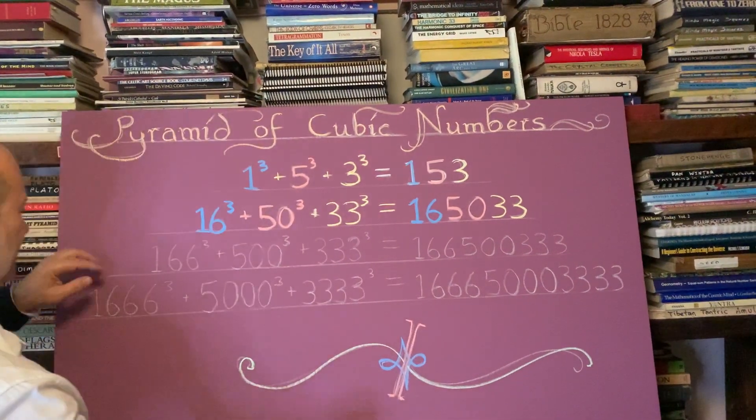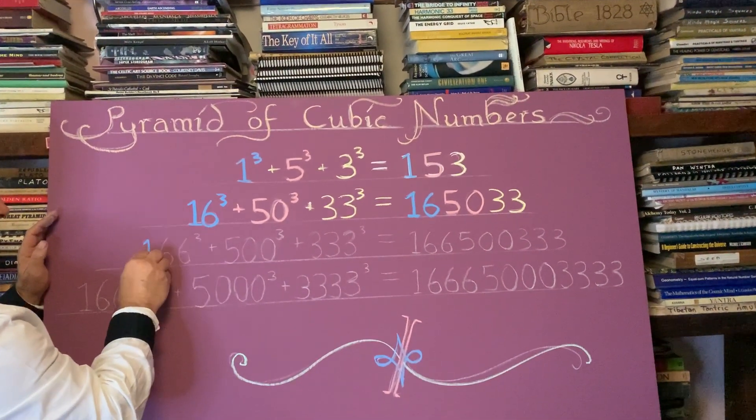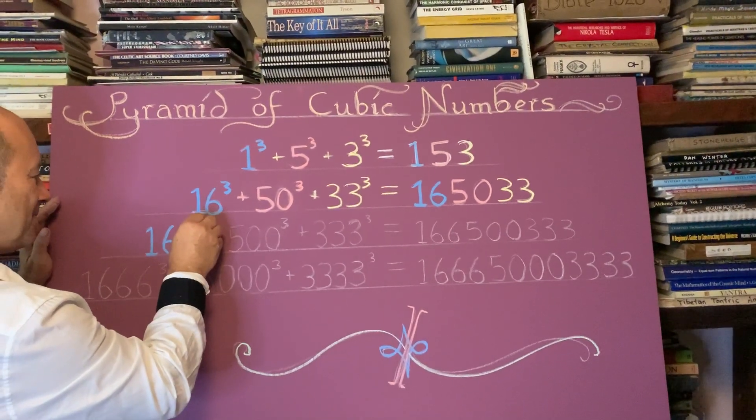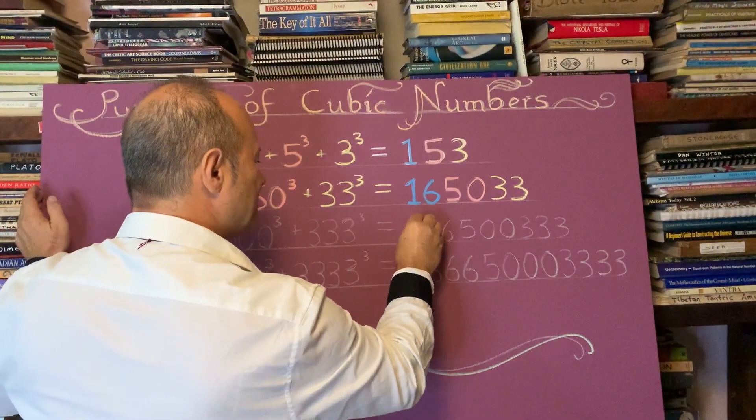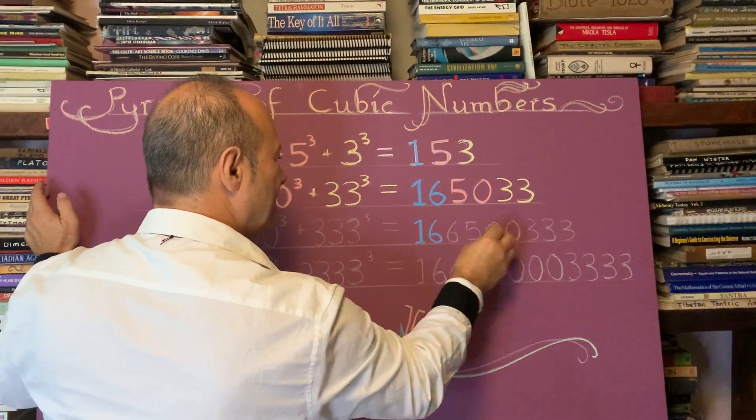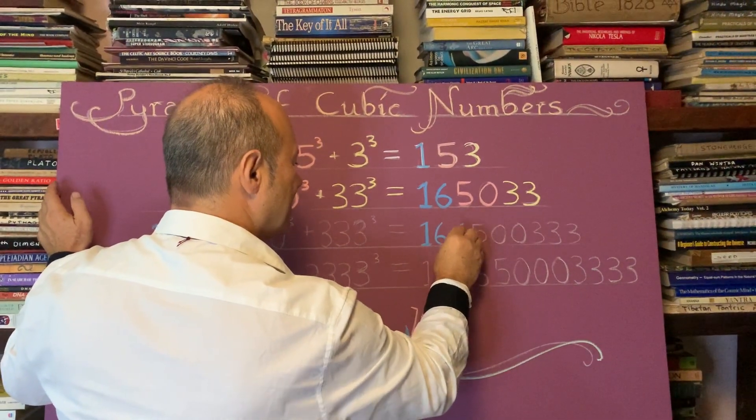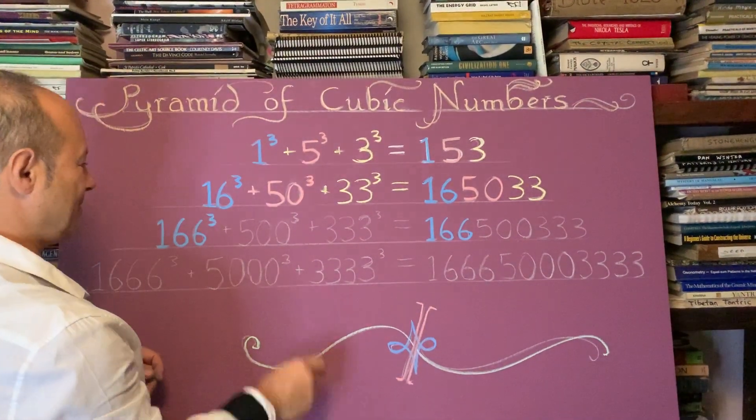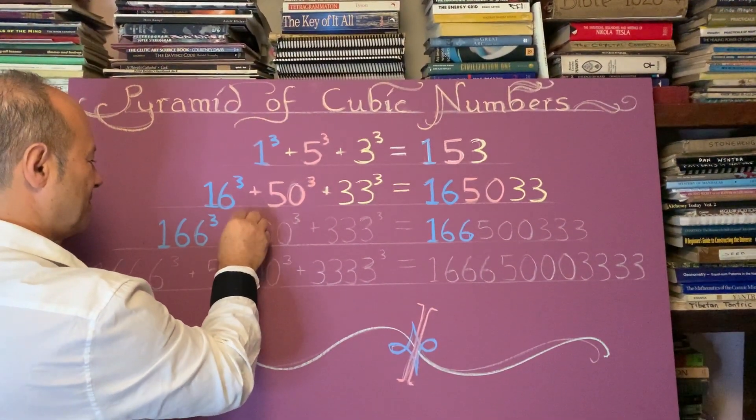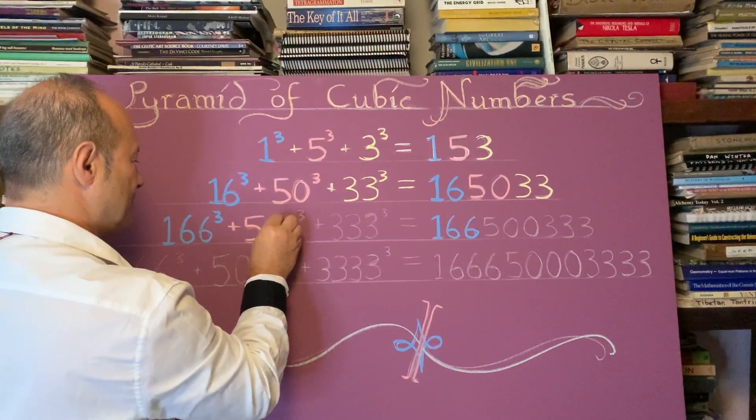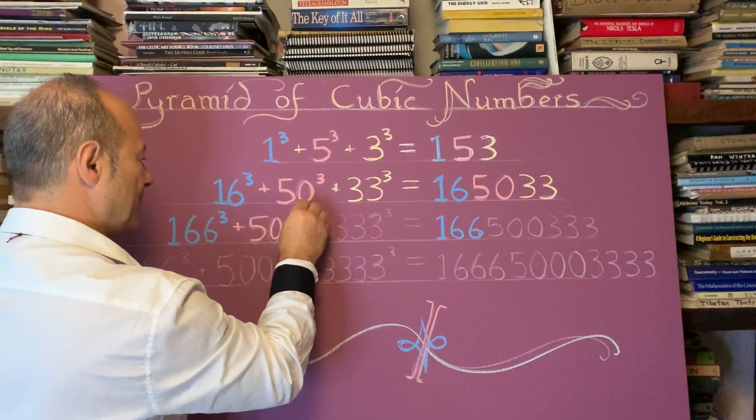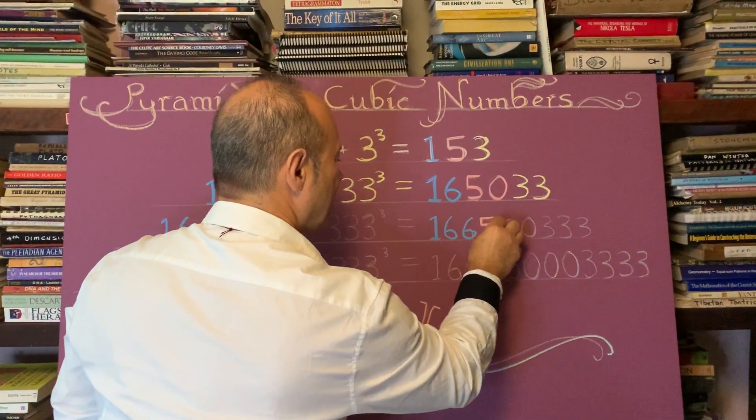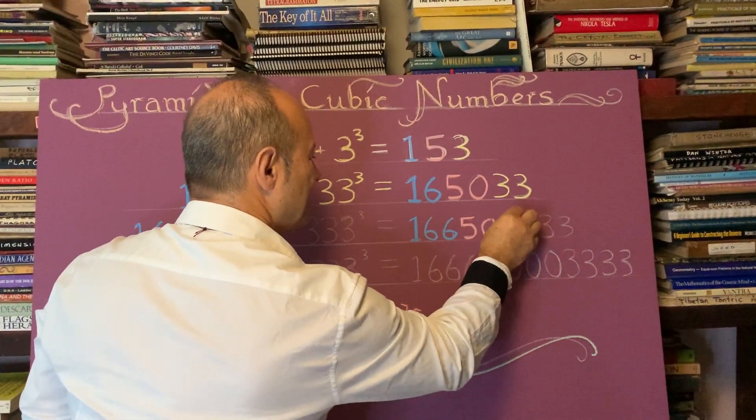So we're going to start again. We're going to keep to the ones and sixes here. So 166 cubed is going to give this part of the answer here. You can see that we're in the millions here. 166 million something plus 500 cubed, which gives the 500 over here. It's quite amazing how this happens.